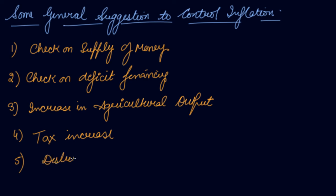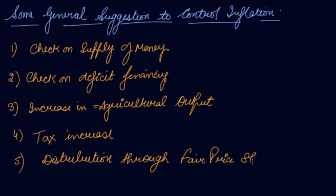Number five is distribution through fair price shops. If there is inflation in the economy, it will largely affect the poor section of society and people living below the poverty line. Necessity goods and services should be distributed through the public distribution system and ration shops to at least provide them with essential goods.